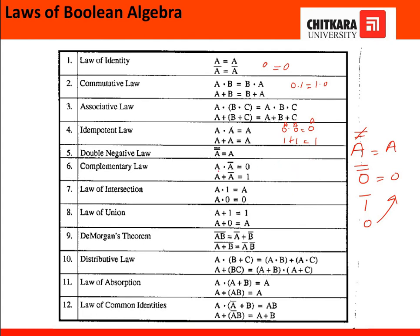Next is the complementary law, which says a·ā equals 0. For example, 0·0-bar equals 0·1 equals 0, because the AND gate gives output only when both inputs are 1. Also, a+ā equals 1: if a equals 0, then 0+1 equals 1, as the OR gate states. The answer remains the same for any value.